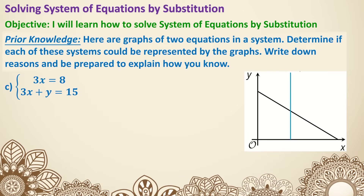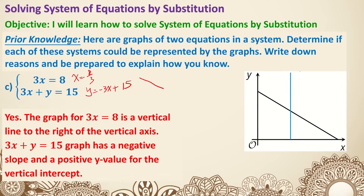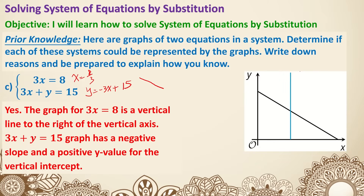C: 3x equals 8, which is x equals 8 thirds, which potentially could be the case. And then 3x plus y equals 15 — that's actually y equals negative 3x plus 15, which does mean it's a line that goes down, so potentially this could represent. Yes — it's a vertical line to the right of the vertical axis, and the other one has a negative slope and a positive y-intercept, just like what's shown. So C is a yes.